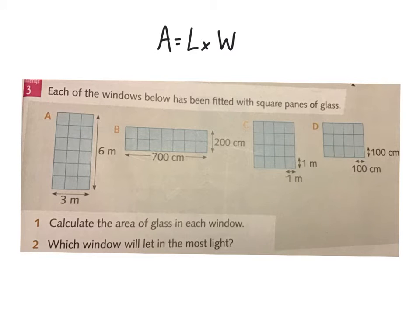In challenge 3, it says each of the windows below has been fitted with square panes of glass. Calculate the area of glass in each window.